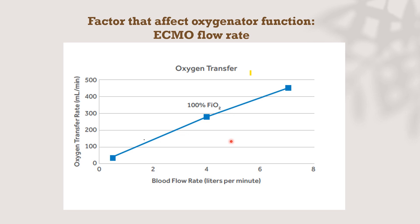Another factor affecting oxygenator function is ECMO flow rate. If we increase ECMO flow rate by one liter per minute, with all other factors fixed, the oxygen transfer will increase. For example, at 2 liters per minute the oxygen transfer will be 150 mL per minute. At a flow rate of 5 liters per minute, the oxygen transfer will be about 325 mL per minute. So every time we increase the flow, the oxygen transfer rate will increase.